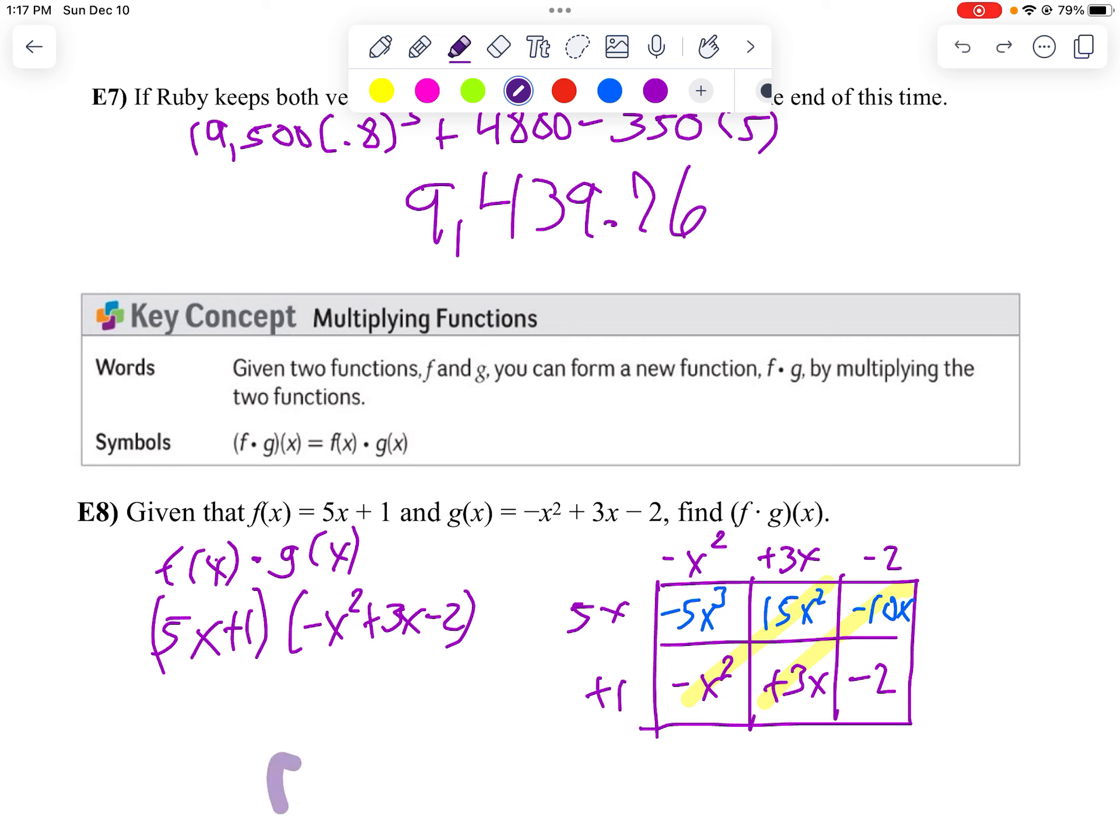So my answer here is going to be f of x. Whoops. I always forget to do that. So I'm going to say f times g of x is going to be negative 5x cubed. And then plus 14x squared. And then minus 7x minus 2. And there's our answer to example 8.